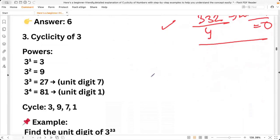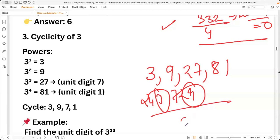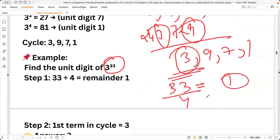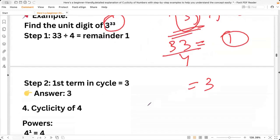Now let's see cyclicity of three. Cyclicity of three goes like this: 3^1, square, cube, power 4. The unit digit will be 3, 9, 7, 1. So if you have to find 3^33, what is the unit digit? 33 divided by four, remainder is one. So the first one, the unit digit will be three.